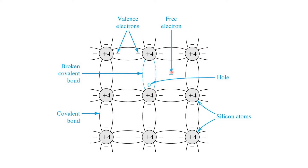For example, if electrons move from right to left through the semiconductor lattice, that represents a net movement of negative charge from right to left, or equivalently, a net flow of positive charge from left to right. Similarly, if holes are traveling from left to right, that would be an additional source of positive current flowing from left to right.